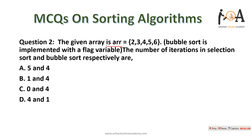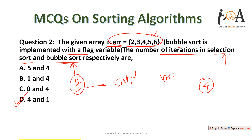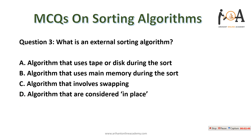The next question: the given array is 2, 3, 4, 5, 6. Bubble sort is implemented with a flag variable. The number of iterations in selection sort and bubble sort respectively are what? Selection sort is insensitive to input order and always takes n minus one iterations — that is four. Bubble sort with a flag: if the array is already sorted, it takes only one iteration. So option D — four and one — is the correct answer.